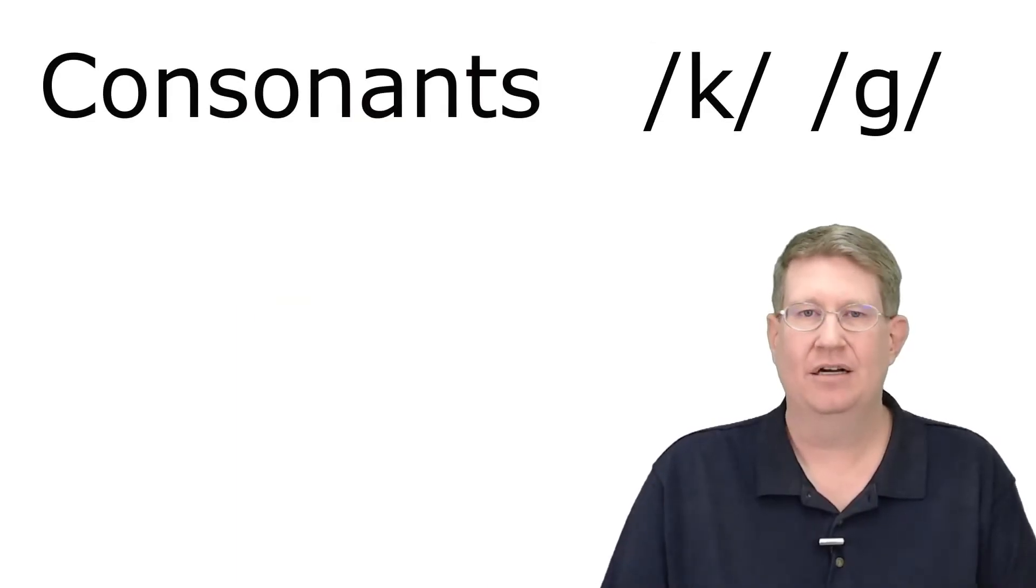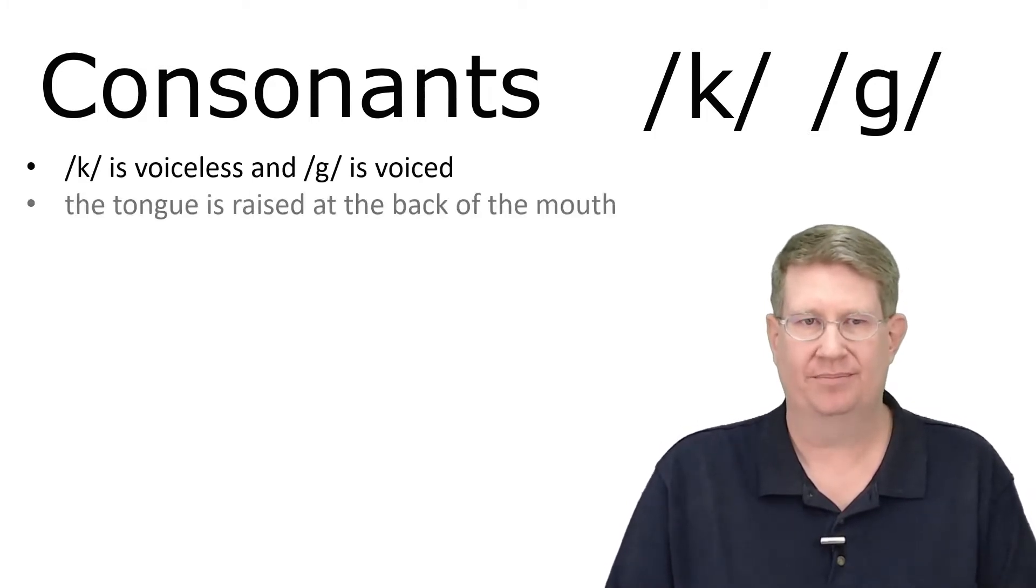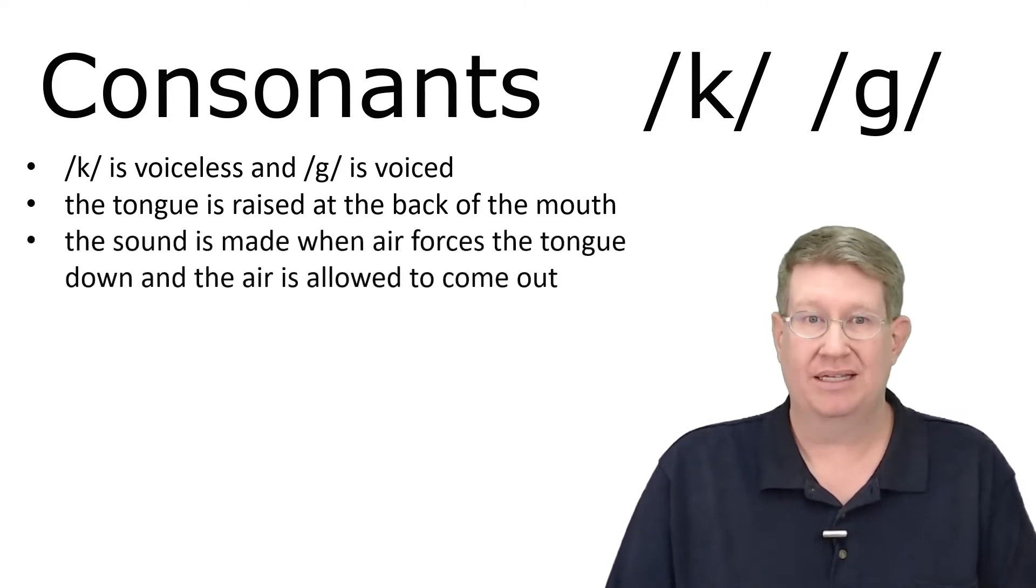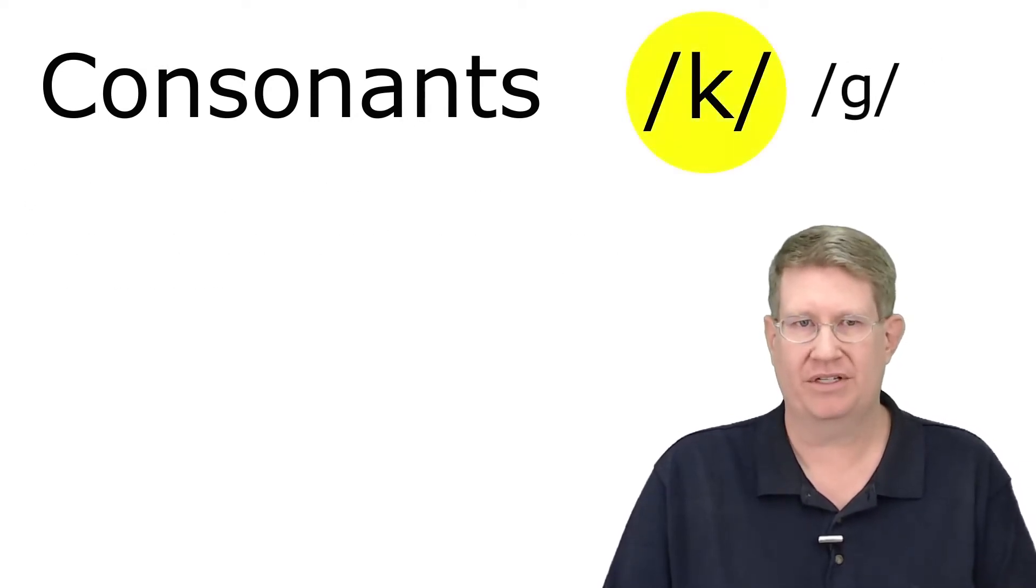K and G are a matched pair. K is voiceless and G is voiced. The tongue is raised at the back of the mouth. The sound is made when air forces the tongue down and the air is allowed to come out. Let's look at some examples.